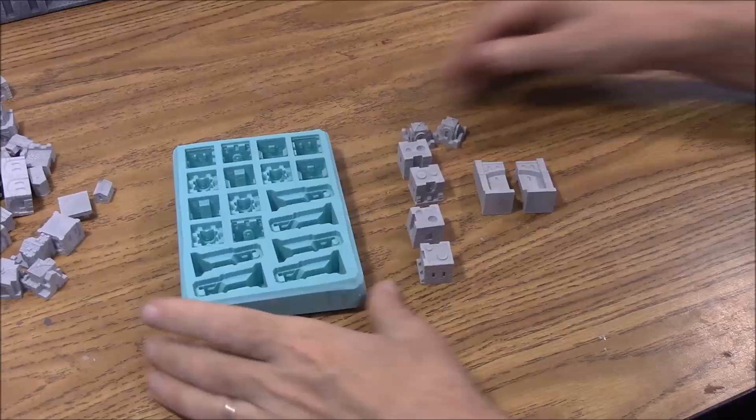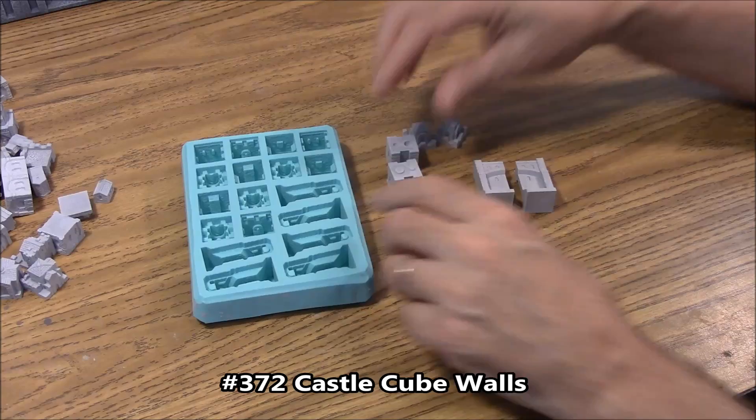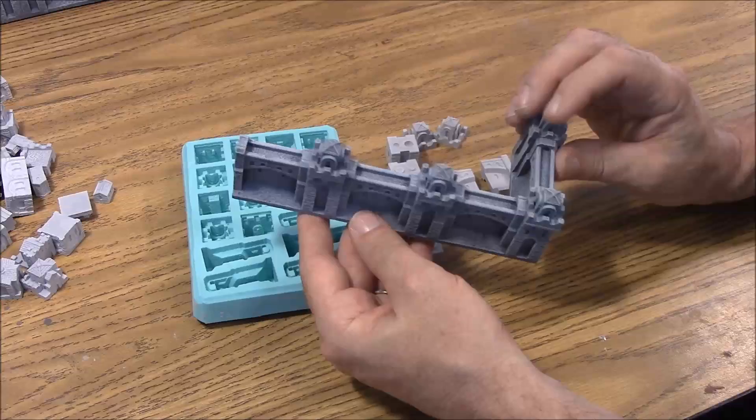Now the final mold is number 372, which is the castle cube wall mold. And what I'm going to do is tell you how to assemble the towers, and when you get done the castle walls will look something like this when you get them done here.